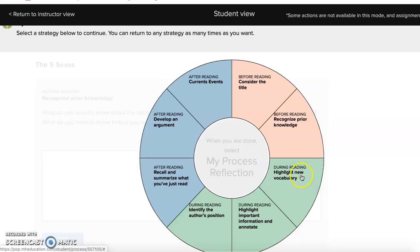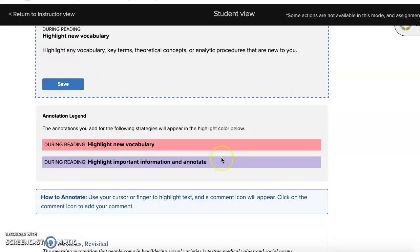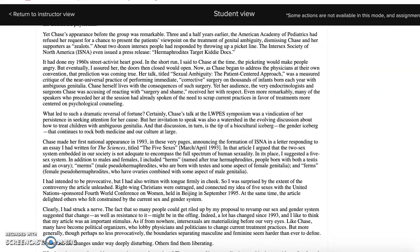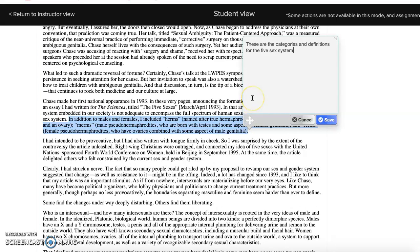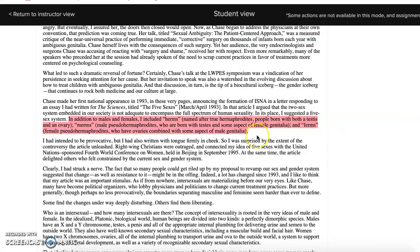Once we get into the assignment, the students are going to be asked to highlight new vocabulary and we're going to scroll down here. I'm going to find my new vocabulary and highlight it and then write these are the categories and definitions for the five sex system. I'm going to save that.